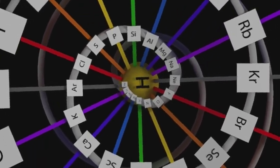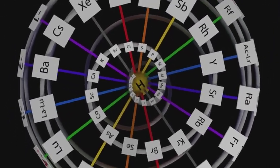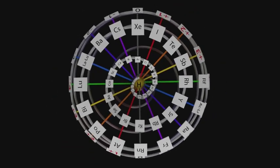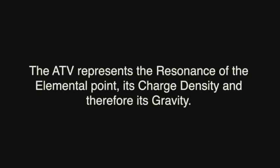The model of the elements describes the parable of family relationships that exist between zero matter, light, matter, sound, crystal form, positive and negative charge, paramagnetic disposition and form. The ATV represents the resonance of the elemental point, its charge density and therefore its gravity.